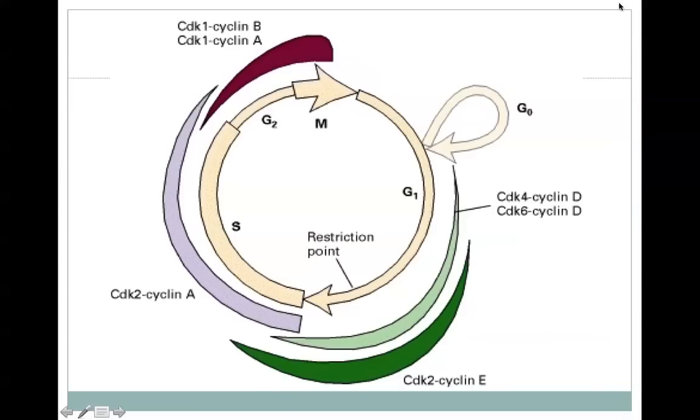And one other thing, which is coming up on this slide, which is not on the other slides, is this G0 idea. G0 represents cells which have exited the cell cycle and are no longer actively dividing. These cells are still alive. In fact, most of the cells in your body are in G0.